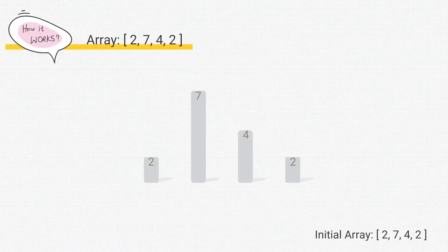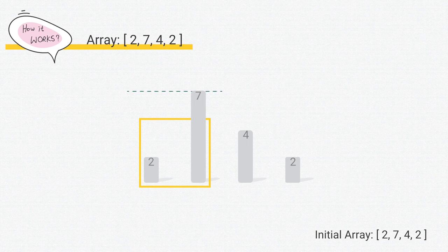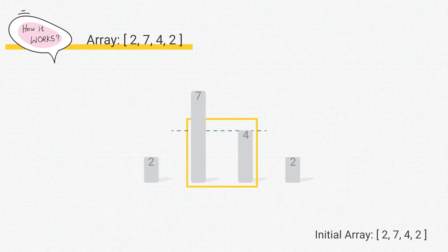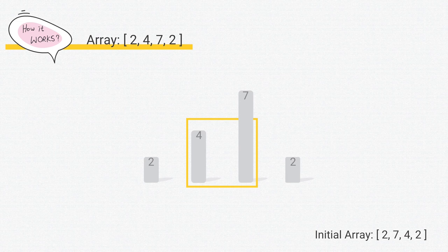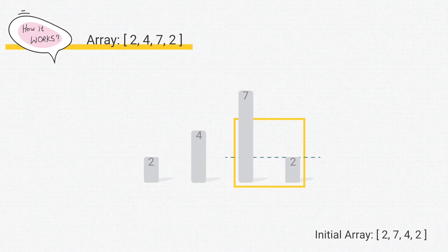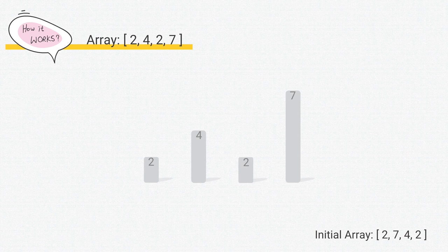We start a comparison with the two elements on the very left, 2 and 7. We draw a rectangle to show what we're comparing. 2 is smaller than 7, so we do nothing. Now we move the rectangle one step to the right and compare 7 with 4. 7 is larger than 4, so 7 should go to the right — we swap their position. Again, we move the rectangle one step to the right and compare 7 with 2. 7 is larger than 2, so 7 should go to the right; we swap their position. We've now finished our first scan. The largest element, 7, is already in its right position.